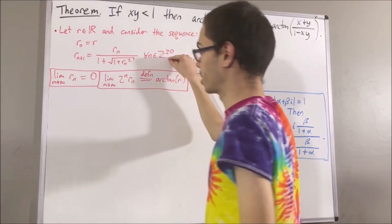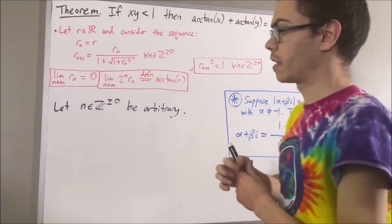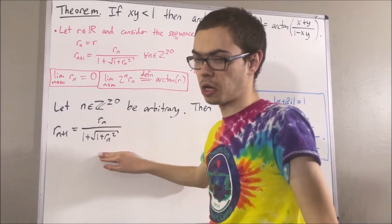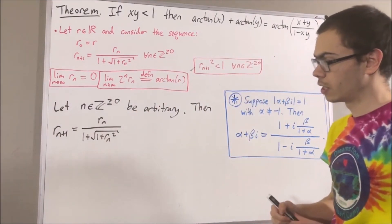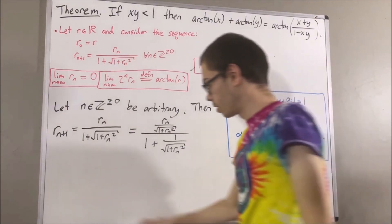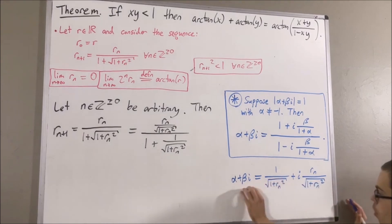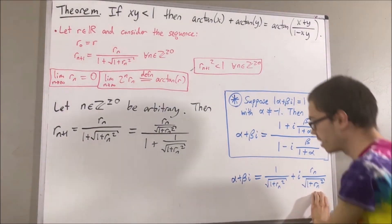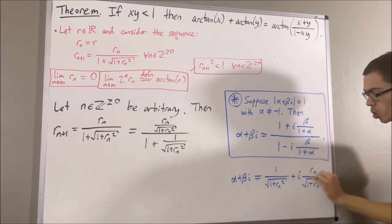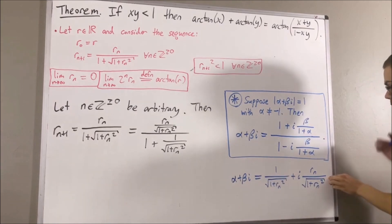To see how this sequence behaves in the complex numbers, let's consider an arbitrary integer n greater than or equal to 0. By definition, we know that rn plus 1 is equal to this. We're going to divide both the numerator and denominator by the square root of 1 plus rn squared. We're going to apply this fact by taking alpha plus beta i to be the following complex number. With this choice of alpha plus beta i, the magnitude of this complex number is certainly equal to 1, and the real part is certainly not equal to negative 1. So we can be sure that this equality is true.